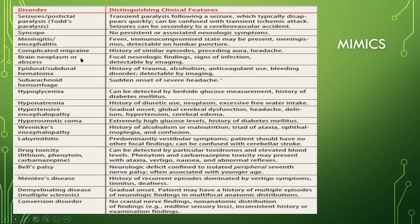Brain neoplasms and abscesses are space-occupying lesions that can present exactly the same as a CVA depending on where they are found — the same with epidural and subdural hematomas. Subarachnoid hemorrhages are not CVAs because they don't occur within the brain itself — they are exterior to the brain, below the subarachnoid matter. Hypoglycemia can present with CVA symptoms, but it's one of the easiest to pick up because it more commonly gives you seizures that may then give you post-ictal evidence of a CVA. Once you check the sugar and treat it, it should resolve.